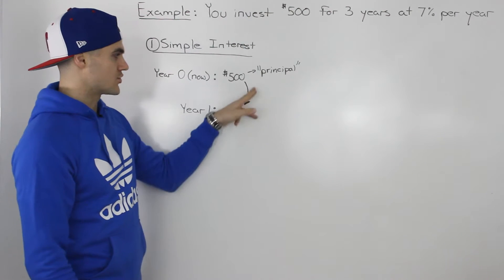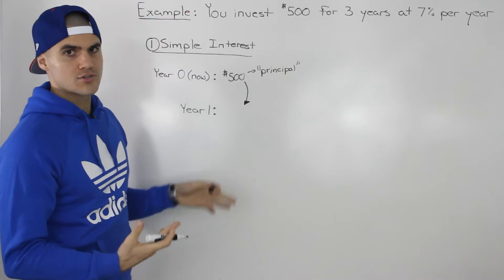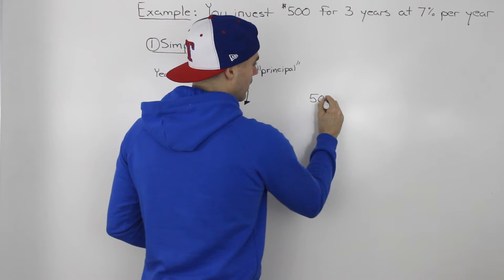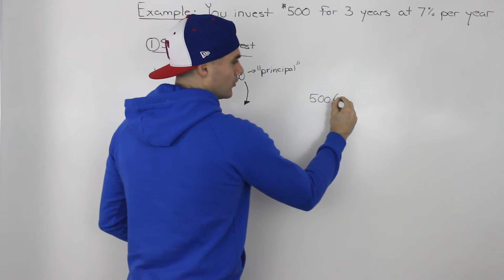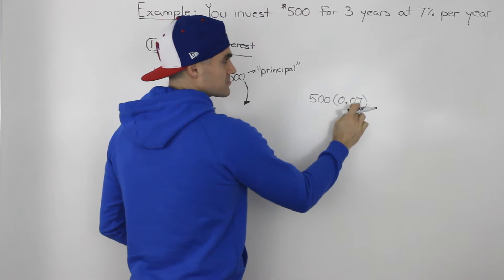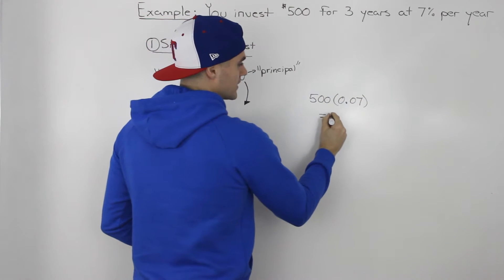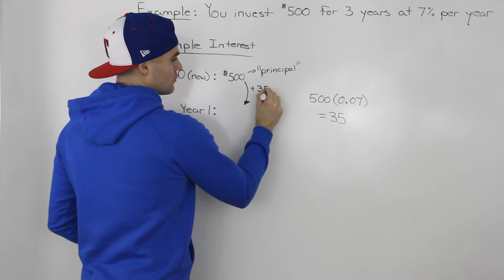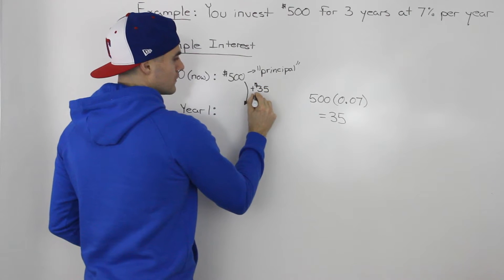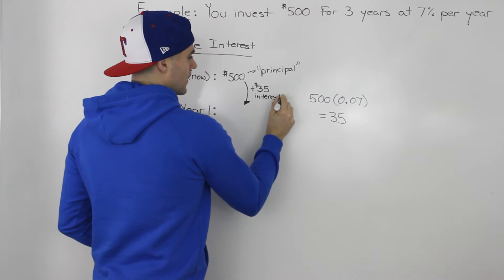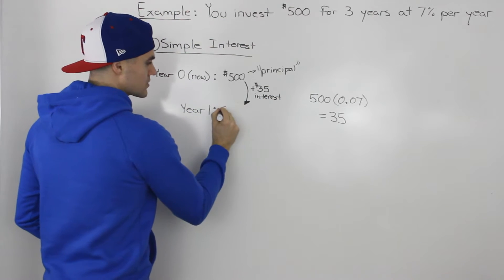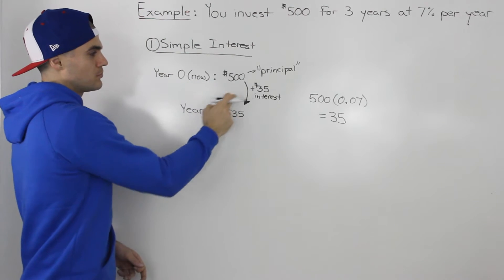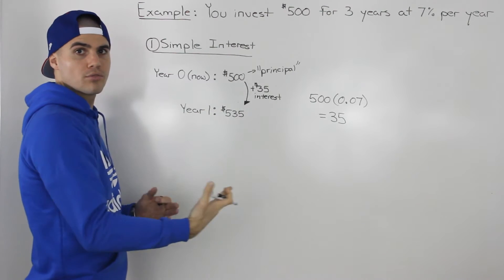In the first year, that $500 is going to earn 7% interest. To figure out that amount, you take $500 and multiply it by 0.07, which gives you $35. So that first year, your $500 is making you $35 worth of interest. At the end of year one, your bank account is going to have $535 — your $500 principal plus the $35 interest earned.